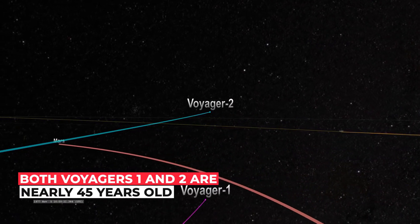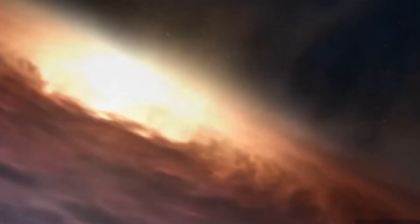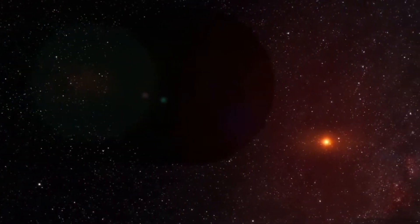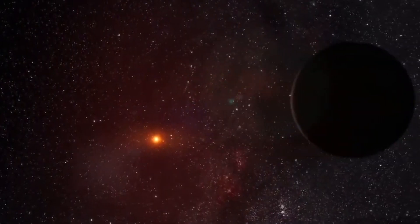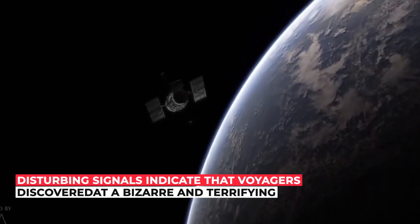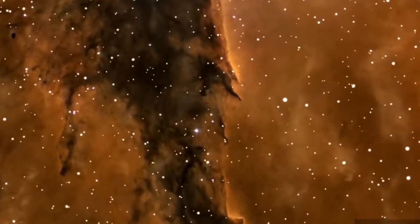Both Voyagers 1 and 2 are nearly 45 years old, far exceeding their original life expectancy. Because interstellar space is a high-radiation environment in which no spacecraft has ever flown, surprises are almost inevitable. The disturbing signals indicate that Voyagers discovered a bizarre and terrifying region at the edge of the solar system.